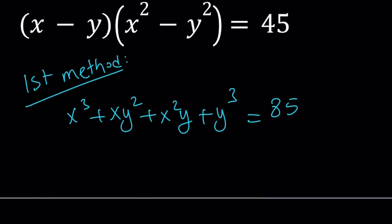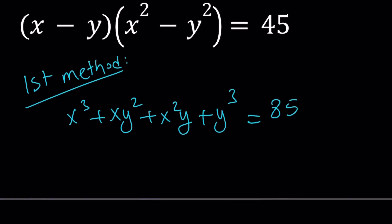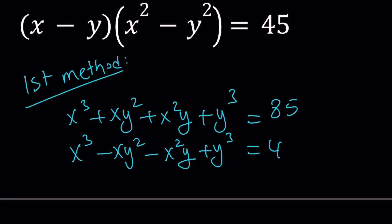The second equation gives you something very similar: x cubed minus xy squared minus x squared y plus y cubed equals 45. Having a common factor encourages me to divide them and take out the 5, but I have a better approach — division could give us a factorable cubic, but let's try something else.